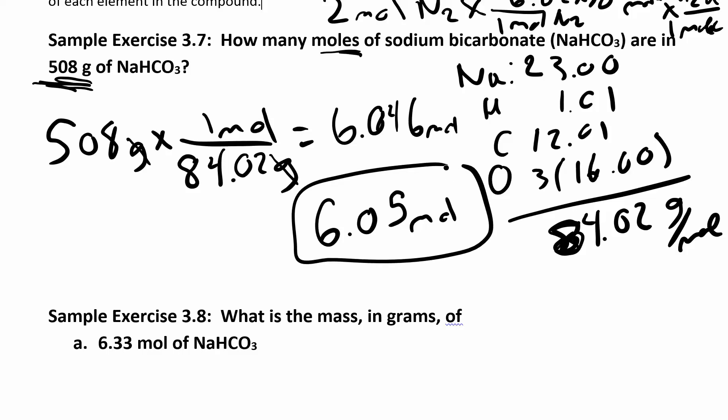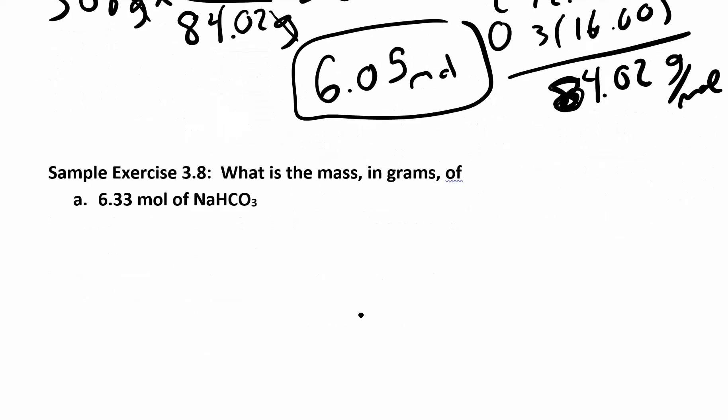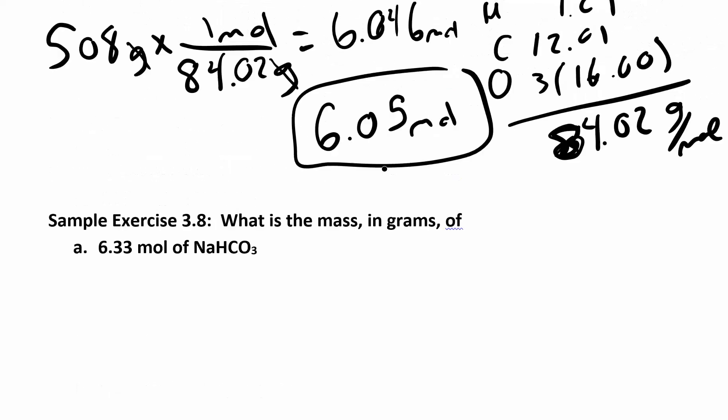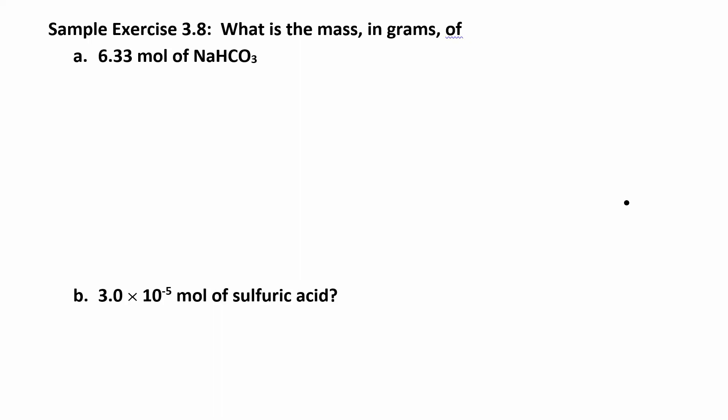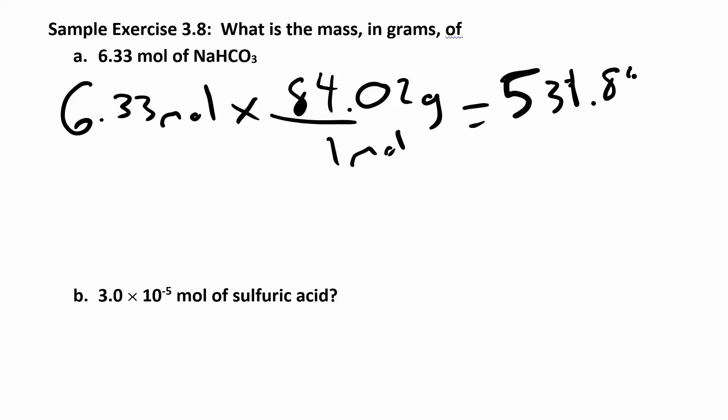If you want to know what is the mass in grams, if we want to go the other way. What if we started off with moles and we want to get to grams? Molar mass is still the same. We still have sodium bicarbonate. If we start off with moles, we have 6.33 moles. And now I have 84.02 grams for every one mole. You can multiply that through. I got 531.847, and let's go to three sig figs, I got 532 grams.